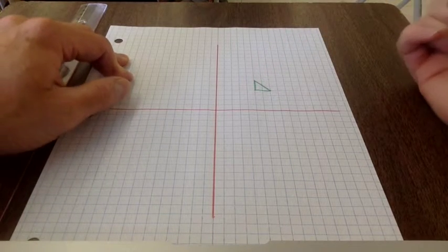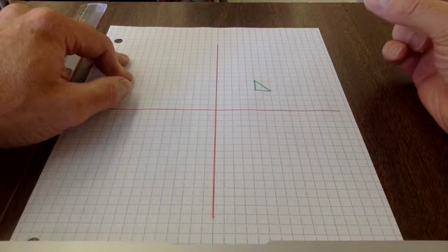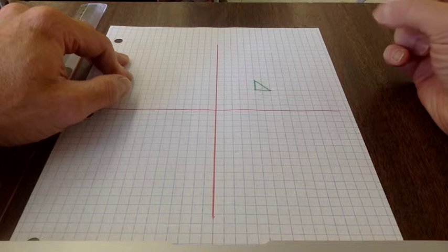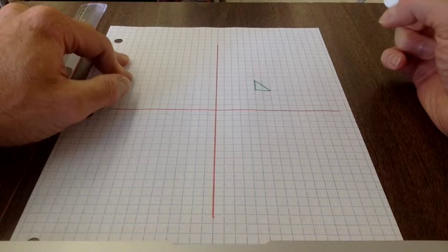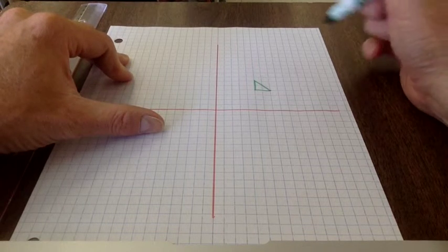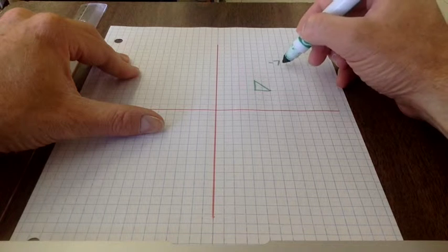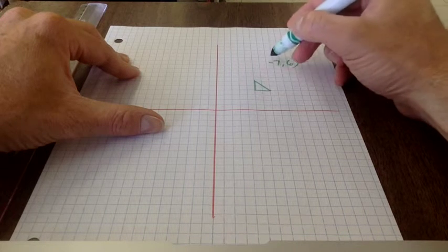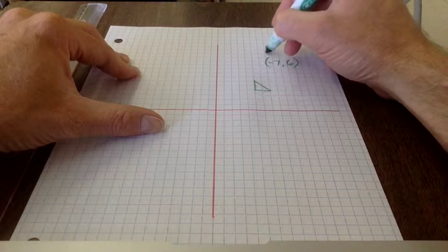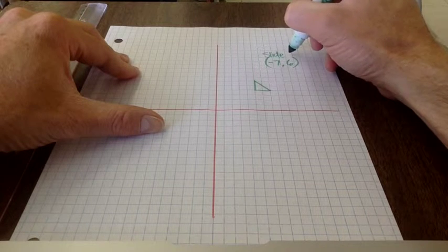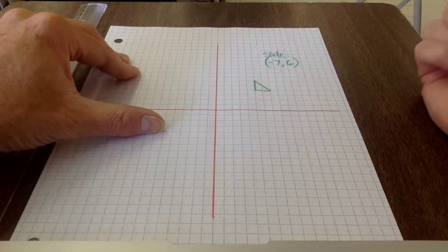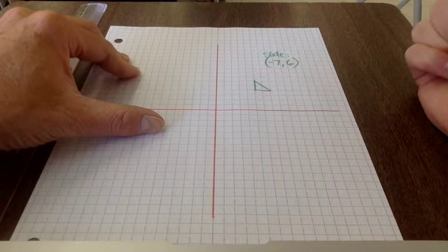Now, ladies and gentlemen, how are we going to slide it? Which direction and by how much? Kathleen? So we're going to slide by negative seven comma six. Fair enough?